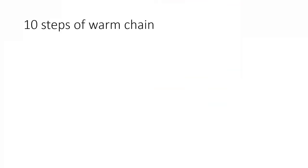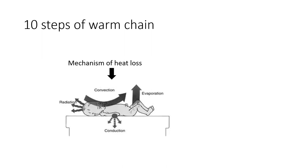Now let's look at the warm chain. Before this, it is important to understand the mechanisms of heat loss in neonates. The four major mechanisms are convection, radiation, evaporation, and conduction. All these can lead to a sudden dangerous fall in newborn temperature. Hence, it is important to follow key steps to prevent heat loss — collectively called the warm chain.